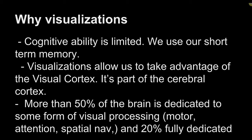Why do we use visualizations? It actually has a lot to do with the science around how the brain works. Our cognitive ability is limited — we have very short-term memory, which only allows small amounts of information to be processed. When we use visualization, we're taking advantage of the visual cortex. More than 50% of the brain is dedicated to some form of visual processing, whether combined with spatial navigation, motor skills, or attention to the environment. About 20% is fully dedicated to performing visual tasks requiring no motor interaction.